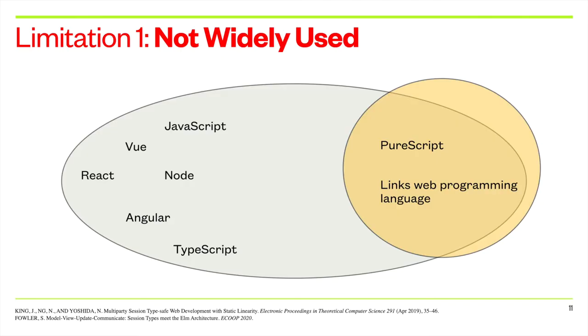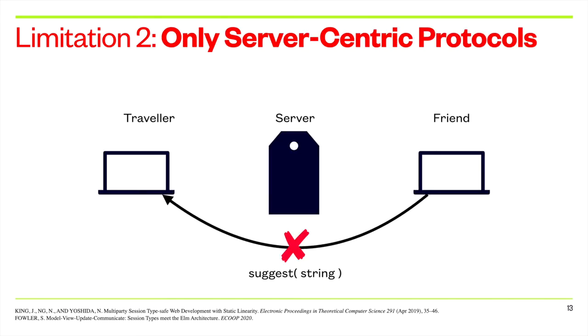However, the current state-of-the-art only supports functional languages, such as PureScript. This deviates from mainstream web programming tools and practices, thus limiting their usability in industry. As they are also based on WebSocket transport, they cannot support peer-to-peer interactions, thus also limiting the range of communication protocols they can express.